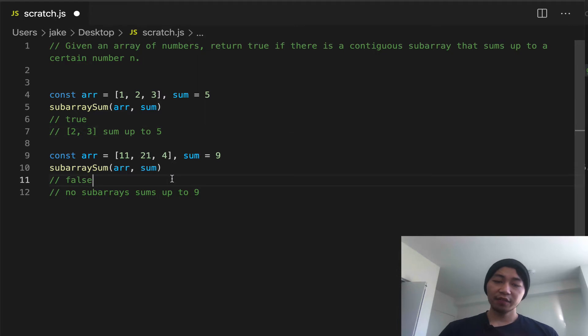Then we have 11, 21, 4 as our second array. And we have a target sum of 9. And this does not sum up to 9, so we return false. Or rather, there is nothing that sums up to 9, so we return false.